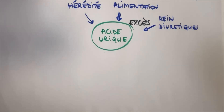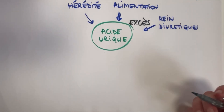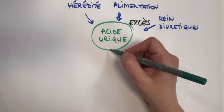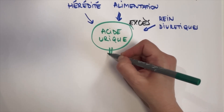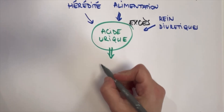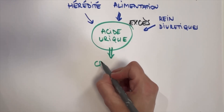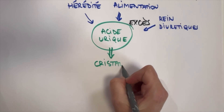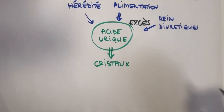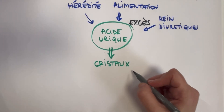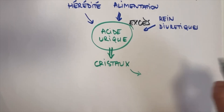Lorsque l'acide urique est à un taux trop important, il va y avoir une formation liée à l'excès de concentration de cristaux d'urates de sodium. Ce sont les cristaux de goutte. Ces cristaux vont pouvoir se déposer au niveau des articulations.